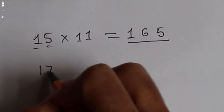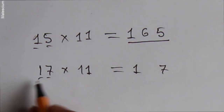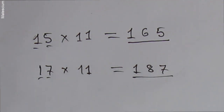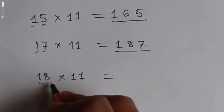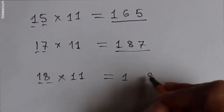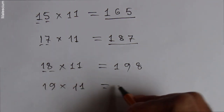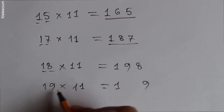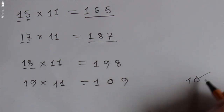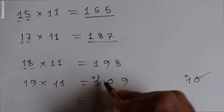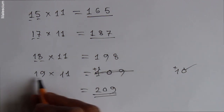Let's say 17 times 11: write 1 here and 7 here, and add the two — 7 plus 1 is 8, giving 187. One more example: 18 times 11 — 8 and 1 here, 8 plus 1 is 9, giving 198. Now there is a slightly different case: 19 times 11 — 1 is here and 9 plus 1 is 10. Write the 0 in between, and the 1 carries over to the left digit: 1 plus 1 is 2. So 209 is the answer of 19 times 11.